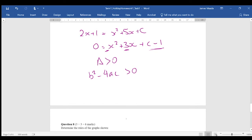b is 3, so we've got 9, 3 squared is 9, minus 4 times 1 times c minus 1, greater than 0. So that means 9 minus 4c plus 4 is greater than 0,